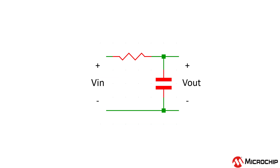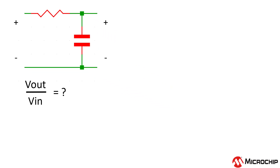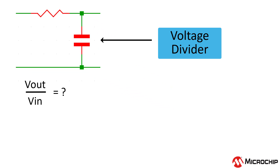We'll start with the classic RC low pass filter. First, let's find the transfer function, or the output voltage of the circuit divided by the input voltage — the fancy way of saying: what do I get when I put something in?